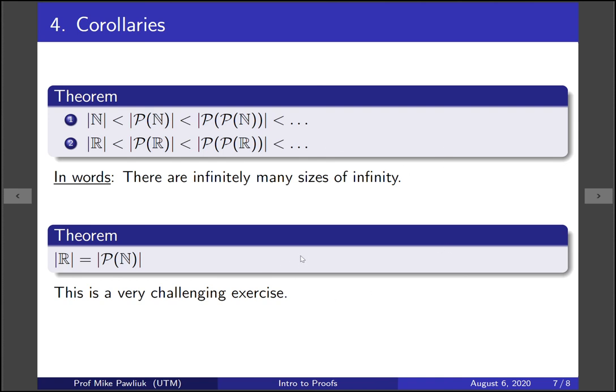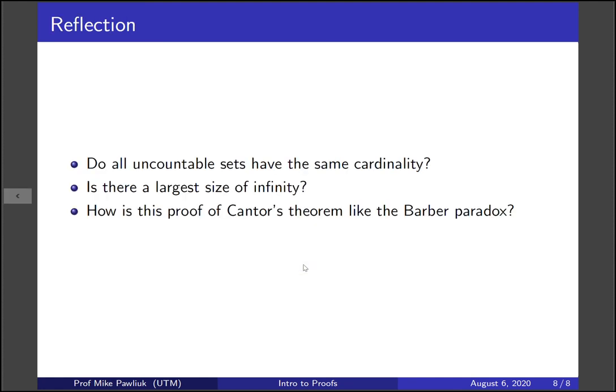So you can prove this on your own, it's a challenging exercise. You might need help with it, you can ask an expert or in office hours or things. Okay, let's take a moment to reflect. Do all uncountable sets have the same cardinality? We know that all countable sets have the same cardinality. Do all uncountable sets have the same cardinality? Is there a largest size of infinity? How is this proof of Cantor's theorem like the Barber paradox we saw in a previous video? Thank you very much and have a great day.